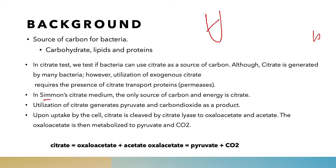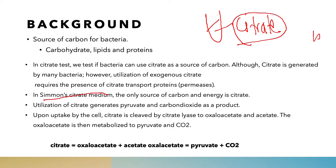This medium is called Simmons citrate medium. In this medium, there is only one compound that can be utilized by the bacteria as a source of carbon, which is citrate. There is no carbohydrate, lipids, or protein — only citrate. We inoculate the bacteria into the citrate medium and observe whether the bacteria can utilize the citrate or not. If the bacteria can utilize citrate, the bacteria will grow; if not, the bacteria cannot grow and will be inhibited.